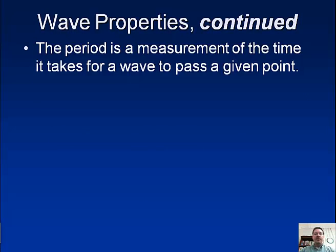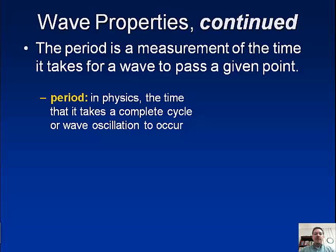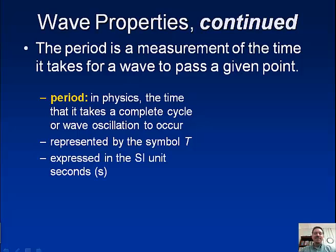Alright, the period is a measurement of the time it takes for a wave to pass a given point. So we can define period in physics as the time that it takes a complete cycle or wave oscillation to occur. So like how long does it take for a wavelength to repeat itself. We use the symbol T, and we measure this in seconds.